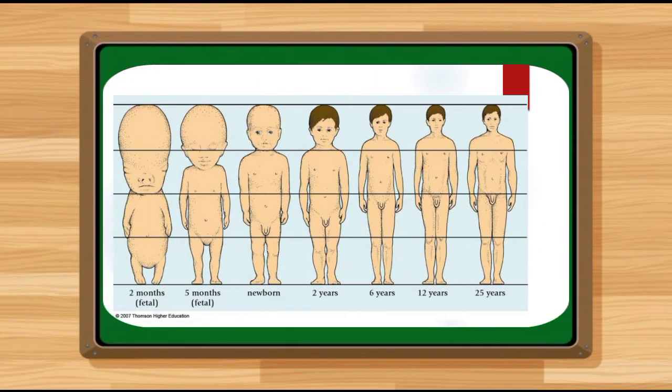Please observe this illustration. You will notice that the younger the child or fetus, the larger the head relative to the body. As the child grows, the head becomes proportionally smaller as development proceeds downward. This is shown from the two-month fetal stage inside the womb, where the head is larger, to five months when the baby grows taller and the head becomes proportionally smaller. That is principle number one.